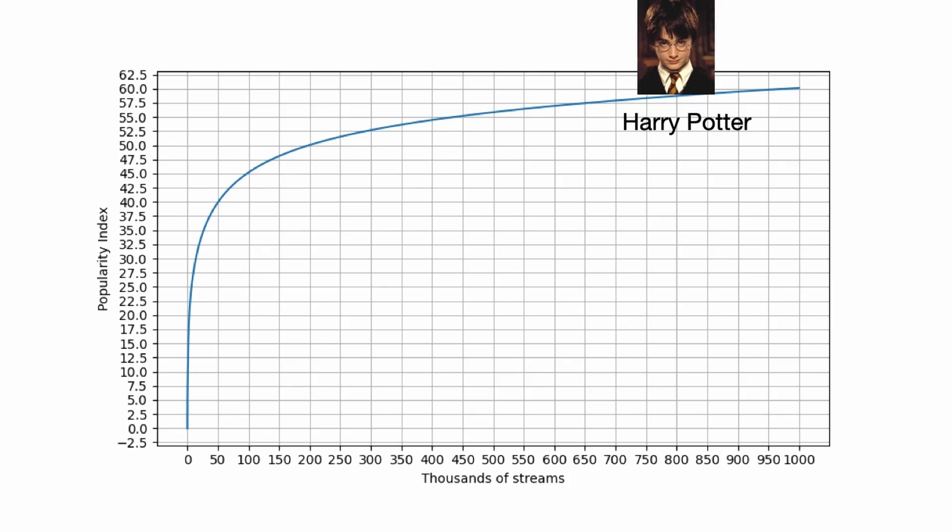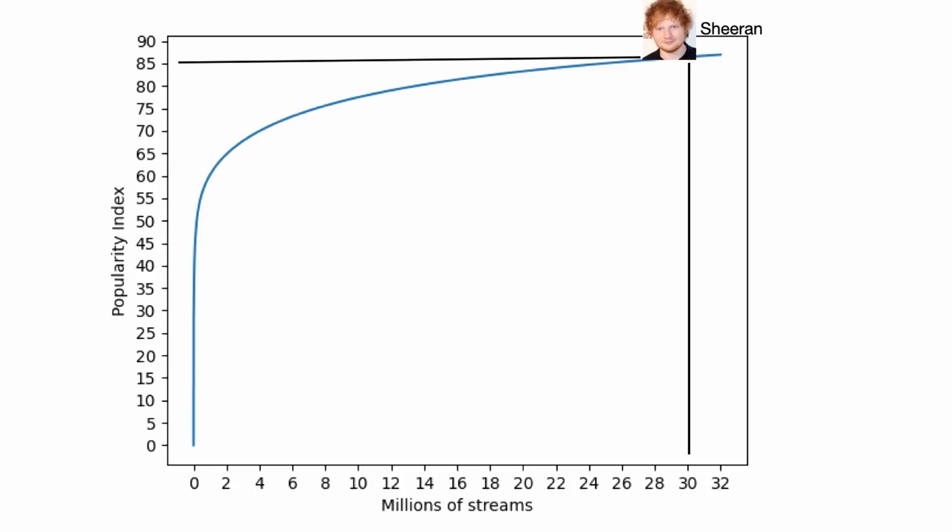If you consider hundreds of thousands of streams, you can find tracks like the Harry Potter soundtrack at roughly 60%. With millions of streams, you can see that in that portion of the curve, millions of streams generate only a few percentage points of the popularity index — very little.